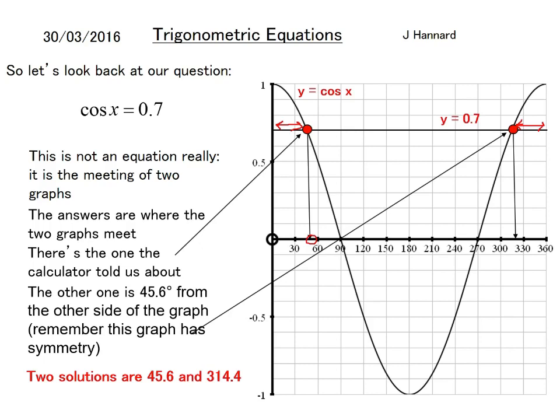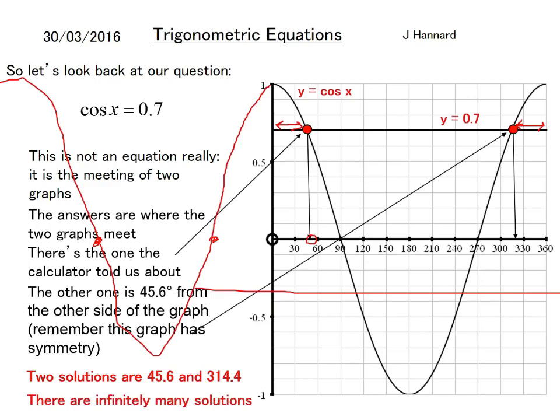But you can see there's another point over here. The other one is 45.6 from the other side of the graph. Because of the symmetry, if we think about this distance here from 0 to 45.6, it is the same distance as 360 minus that answer. So that's how we work it out for cos. We do 360 minus the original answer that the calculator gave you, and you will get 314.4. This is in the range from 0 to 360. You will be told in the exam where you're expected to go.